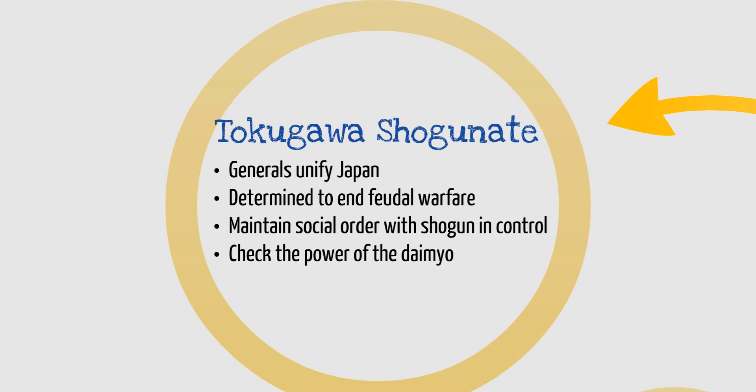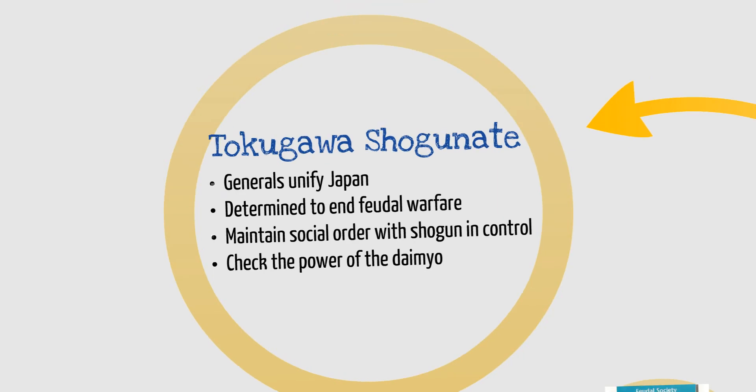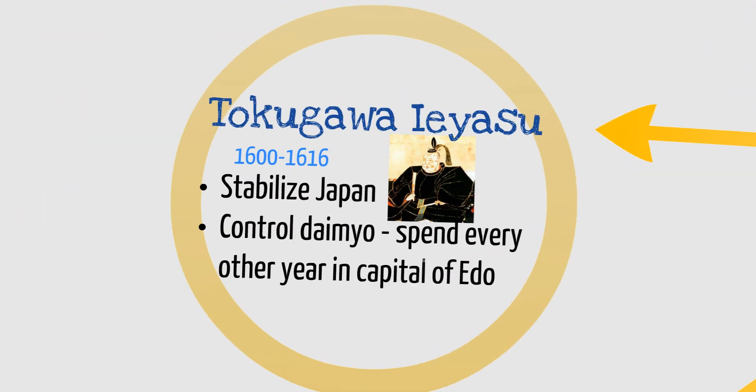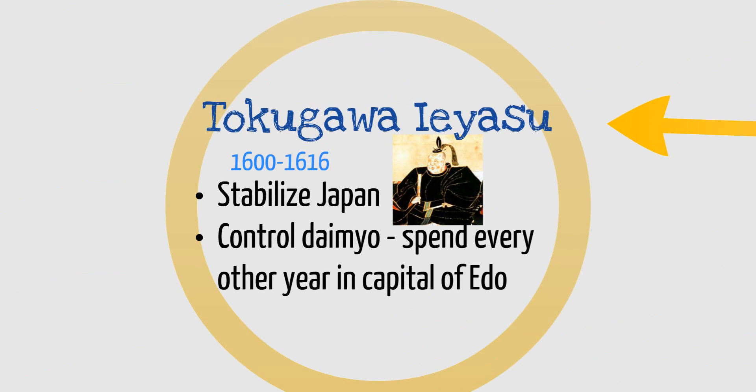The generals or leaders around the shogun for the Tokugawa family ultimately unified Japan. They were really determined to end the warfare that was happening between different daimyo. So they moved forward to have a social order where the shogun was the unifier in control, and then to check the power of those lords or daimyo in their different regions. About 1600 is where the Tokugawa Shogunate began with a person known as Tokugawa Ieyasu.